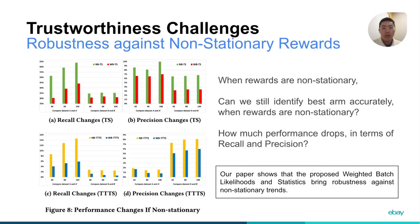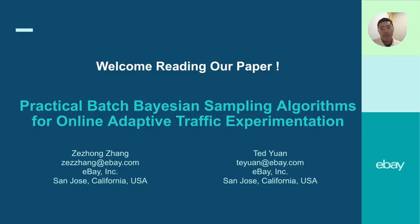The third trustworthiness challenge is the potential non-stationary reward. Our paper evaluates the performance drop in terms of recall and precision when rewards are non-stationary. We hope this promotion video catches your eye, and welcome you to read our paper.